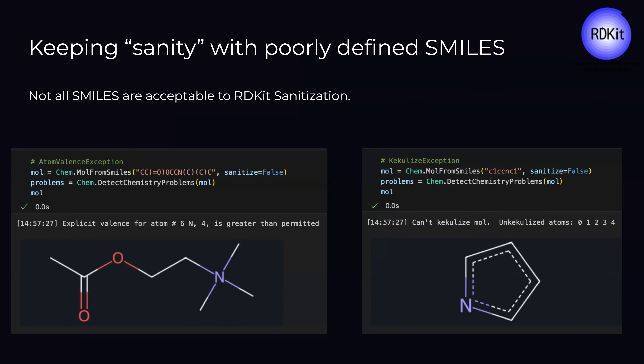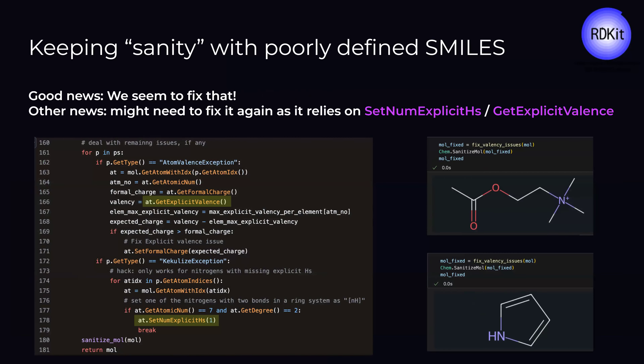Another thing is the sanitization routine, which causes a lot of issues. Some SMILES are not precisely defined or not defined in a canonically preferred way — for example, quaternary nitrogens and kekulization exceptions. RDKit can load them, but once you try to do more with them, it sometimes throws errors because the molecule is not fully sanitized. We seem to be getting around it using a couple of lines of code involving 'set num explicit hydrogens'. Good news: we fixed it — it works, as you can see on the right-hand side.